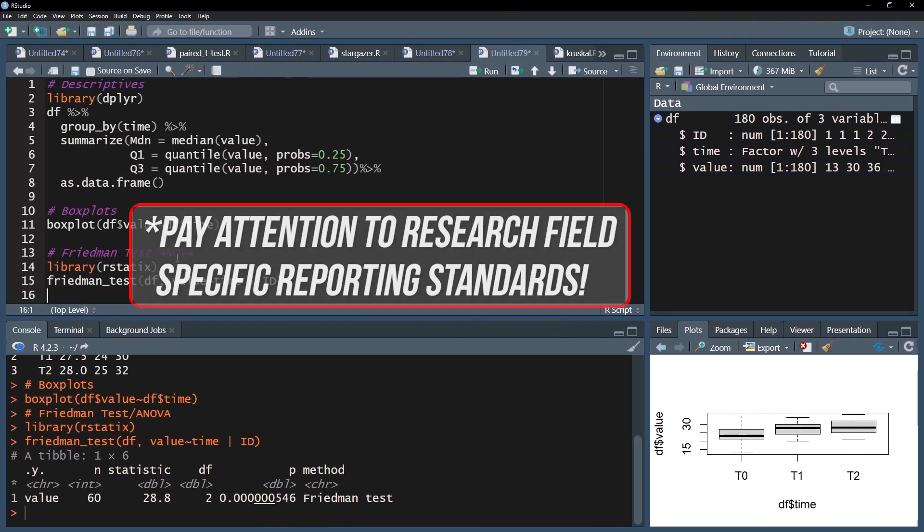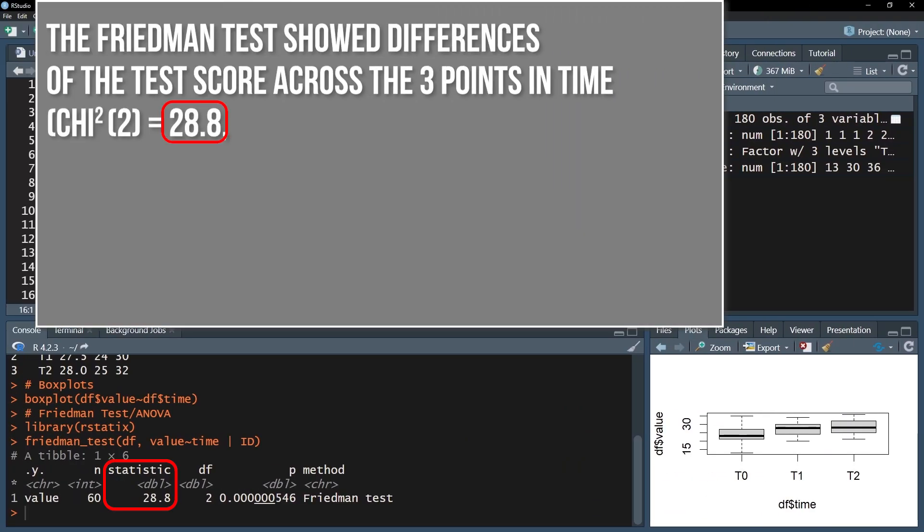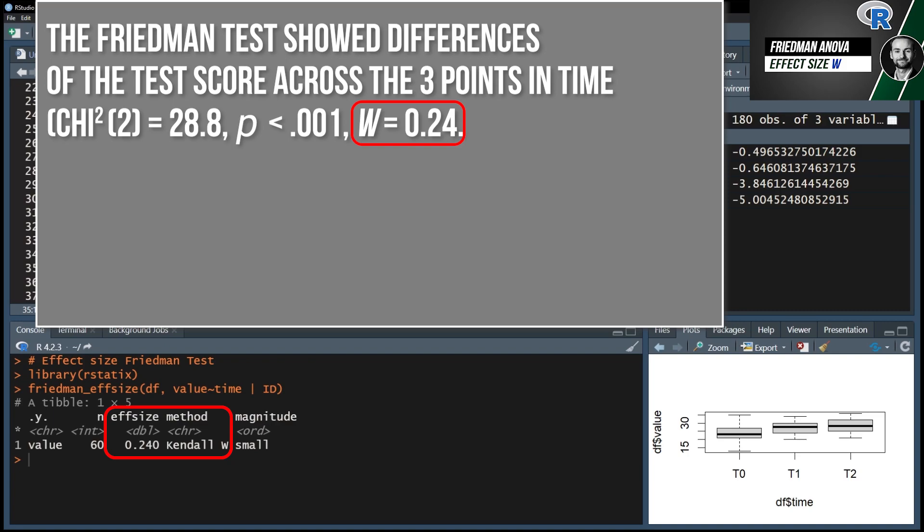First, one formulates whether the measurements are different or not, providing the test statistic alongside the degrees of freedom as well as the p-value from the Friedman test itself. The effect size Kendall's w for the Friedman test is optional, but should be added for fellow researchers.